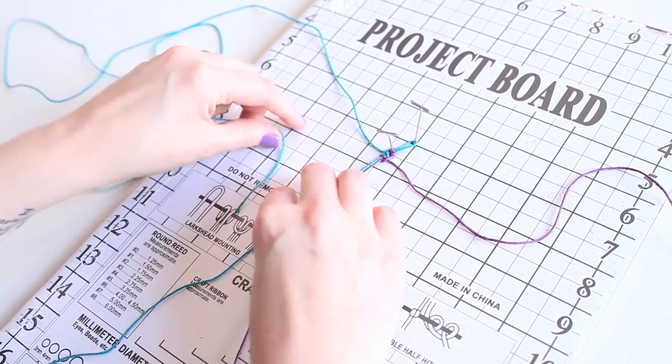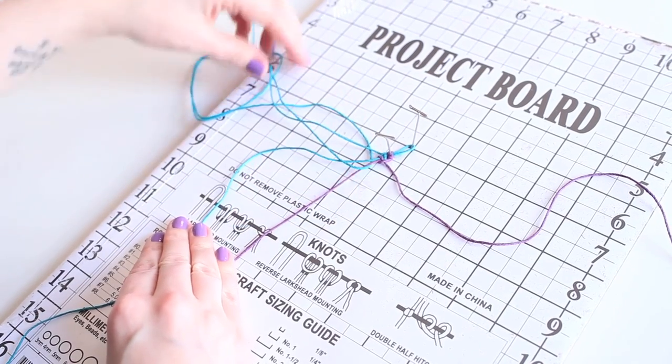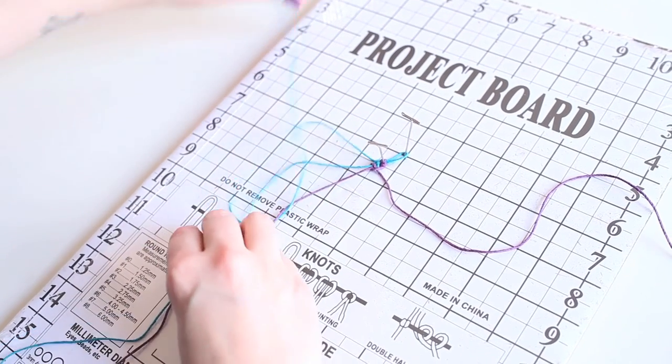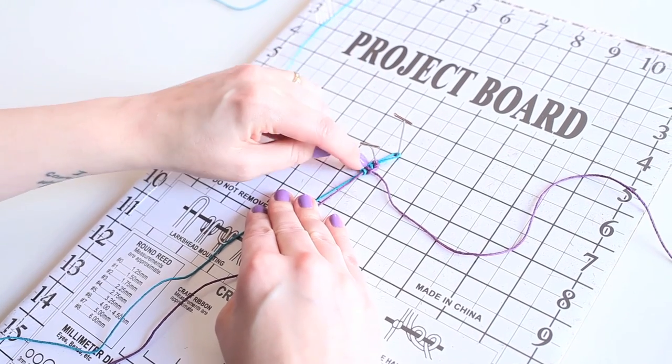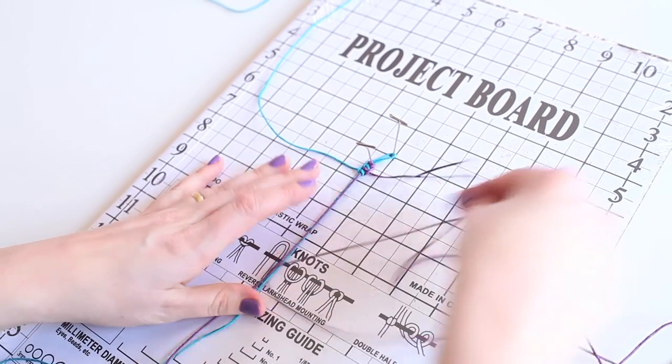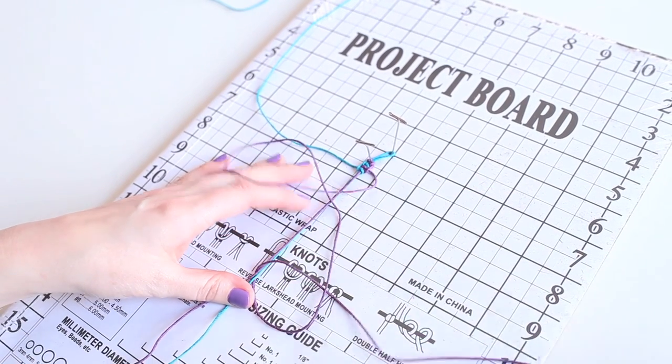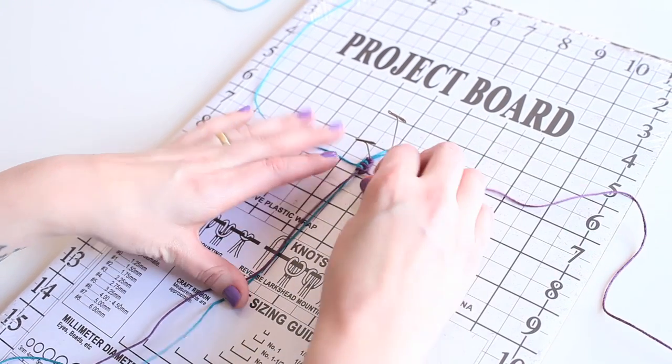So as you work down your bracelet, you'll simply alternate making blue knots on the left-hand side like this, looking for that cursive E, and purple knots on the right-hand side. Again, as we tighten, always look for that cursive E.